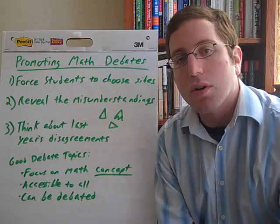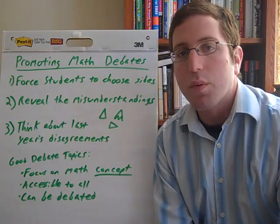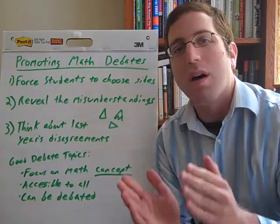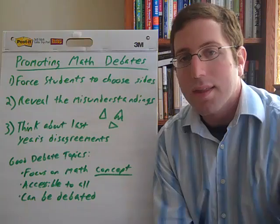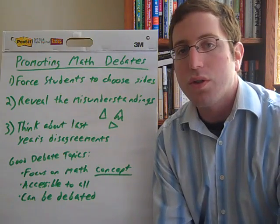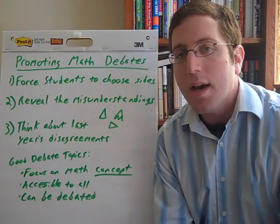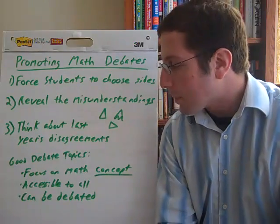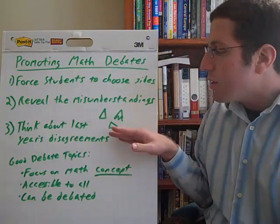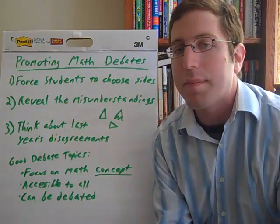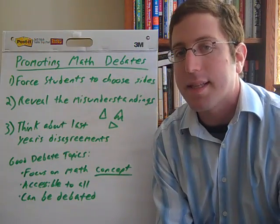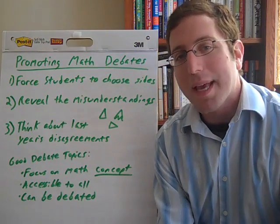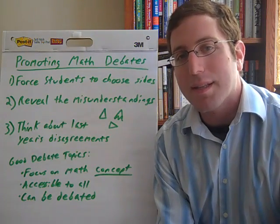They give another example in the article of students who have trouble with the idea of measurement — giving them a sort of broken-off ruler, things that will show students who have a certain misunderstanding that their side actually cannot be correct. The third element of success they give here is: think about last year's disagreements when you're planning these math debates.